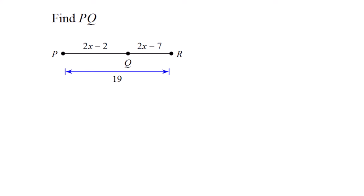This is the segment addition postulate. Find the length of segment PQ. The length of P to R is 19. Add 2x minus 2 to 2x minus 7 and set equal to 19. Now we solve.